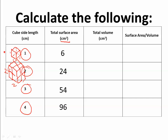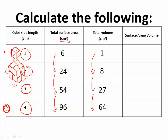What I want you to notice is how these numbers are going up. The surface area is increasing, and the volume is also increasing, but look at the rate of increase — the volume is actually increasing a lot faster than the surface area. If we do the ratio of surface area over volume: six divided by one is six; 24 divided by eight is three; 54 divided by 27 is two; 96 divided by 64 is 1.5. These numbers start getting smaller and smaller.